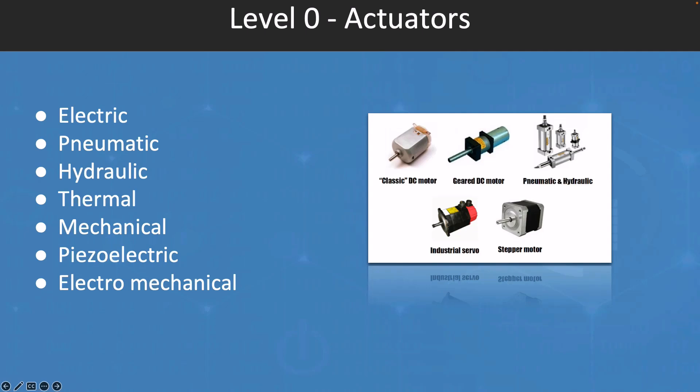Hydraulic actuators use pressurized fluid to generate mechanical motion. They are commonly used in applications where high forces and precision are required. The mechanical actuators use mechanical components such as gears, levers, or linkages to convert electrical or manual input into mechanical motion. They are commonly used in applications where simplicity and reliability are key considerations, such as in the control of valves or dampers.